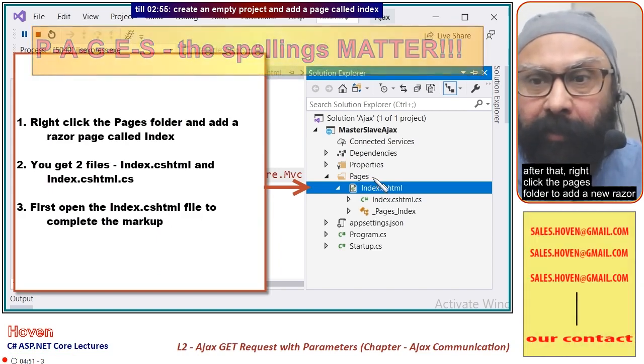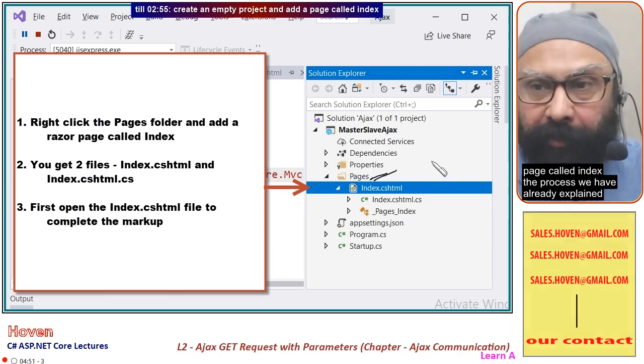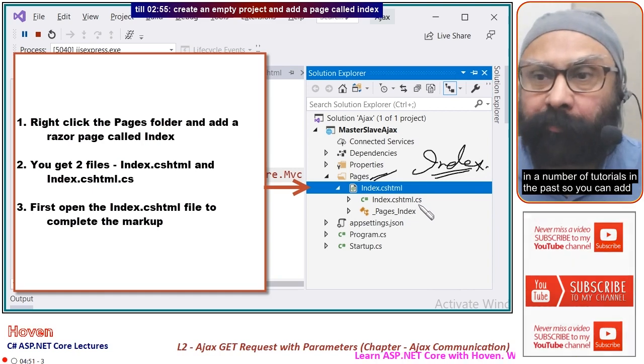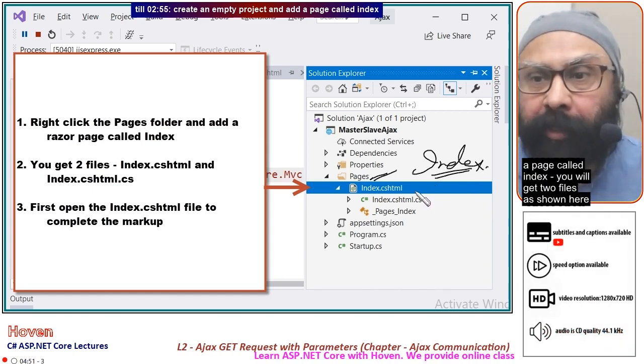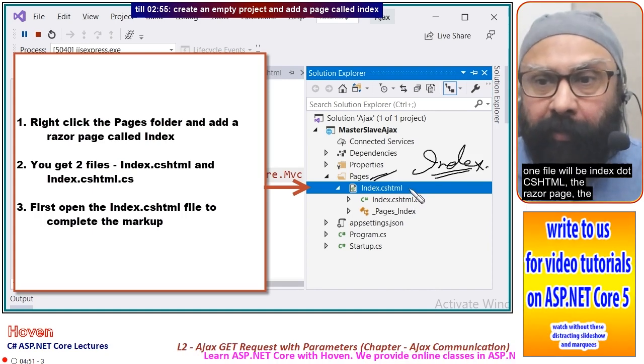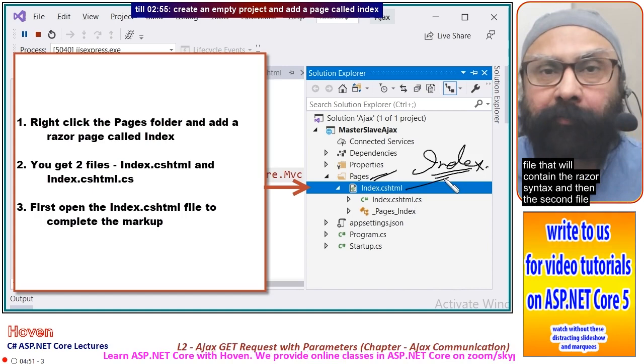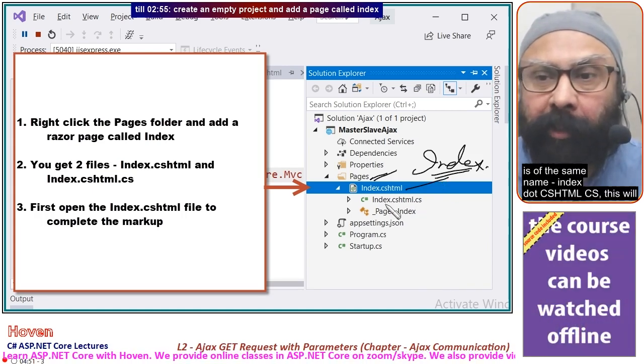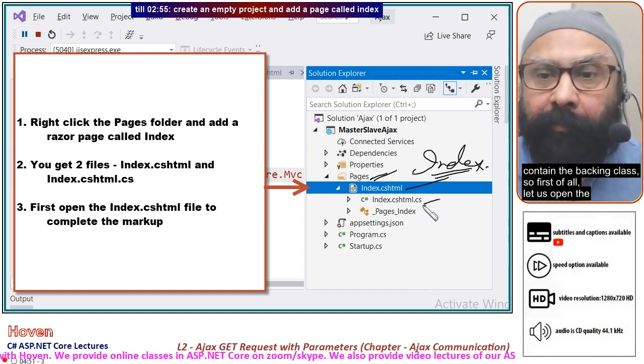Right-click the Pages folder to add a new Razor page called Index. You will get two files: index.cshtml, which contains the Razor syntax, and index.cshtml.cs, which contains the backing class.